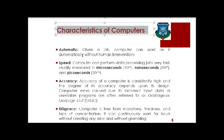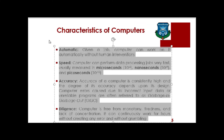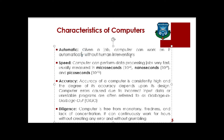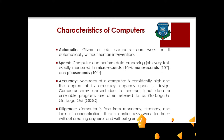Characteristics of Computers: Automatic — given a job, a computer can work on it automatically without human intervention. Speed — computers can perform data processing jobs very fast, usually measured in microseconds (10⁻⁶), nanoseconds (10⁻⁹), and picoseconds (10⁻¹²).